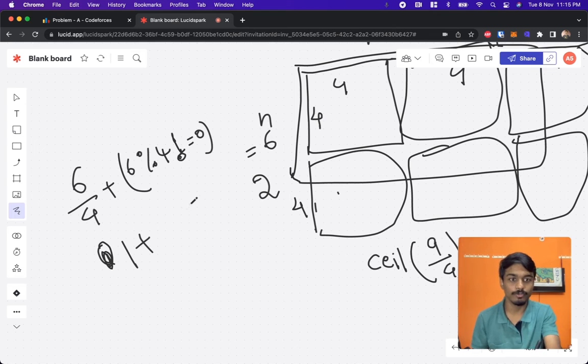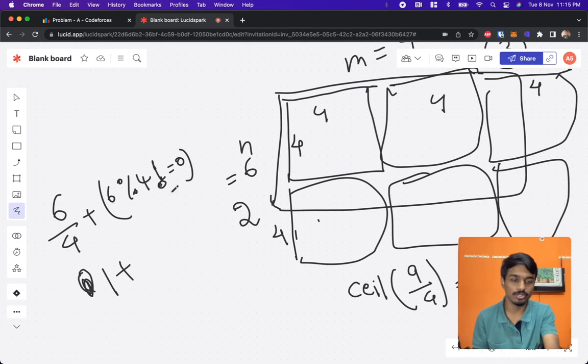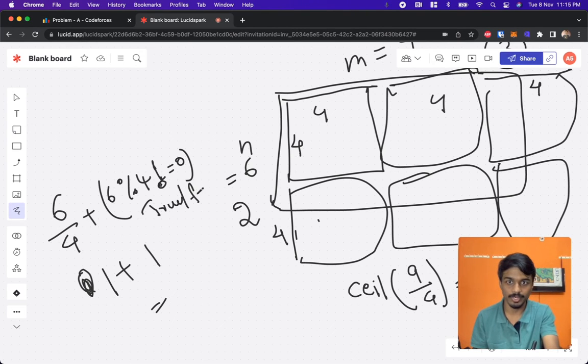What is 6 mod 4? 6 mod 4 is also something like 2. 2 mod 0 is not, so we add 1. It either gives true or false value, right? So here it's true value, so it's 1.